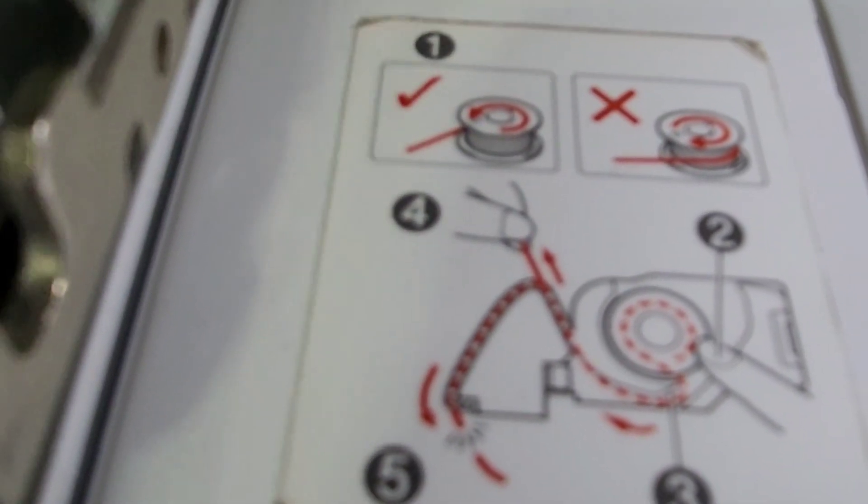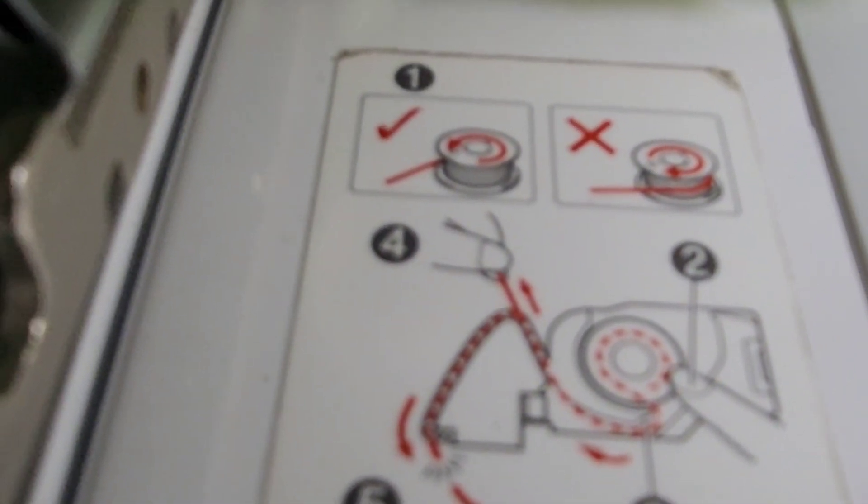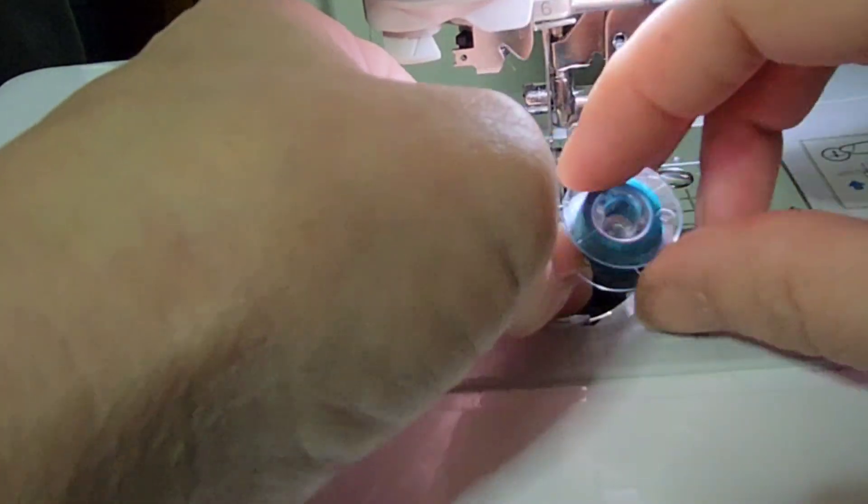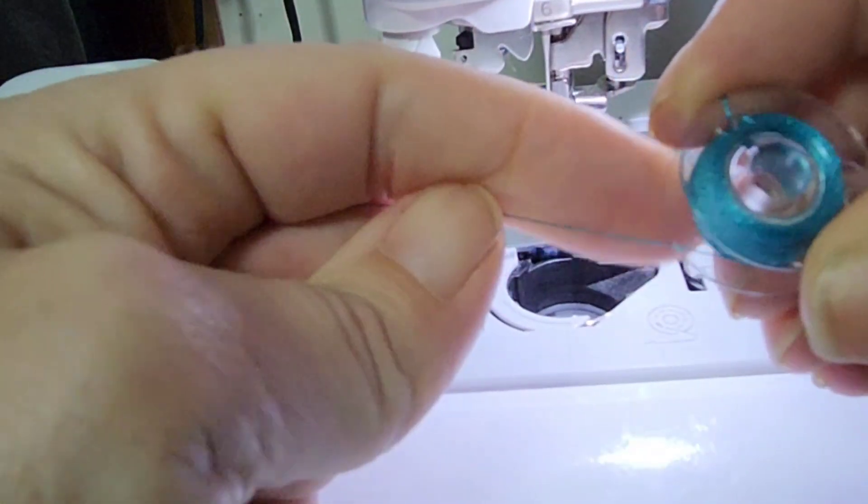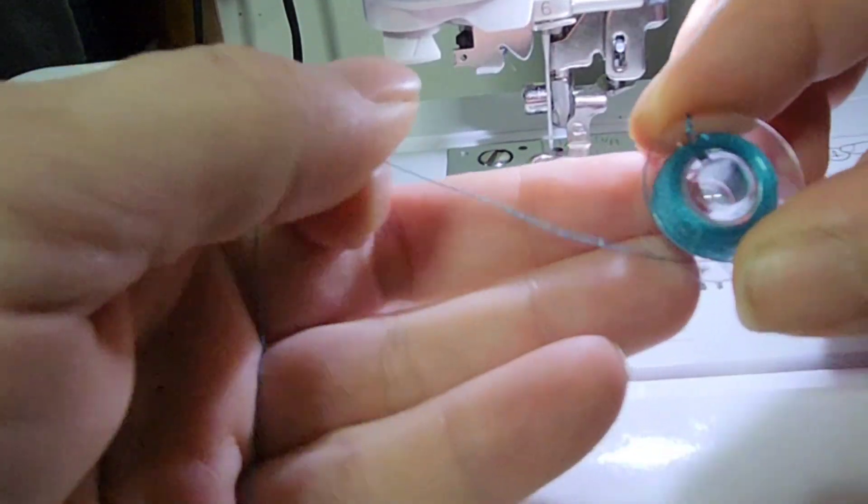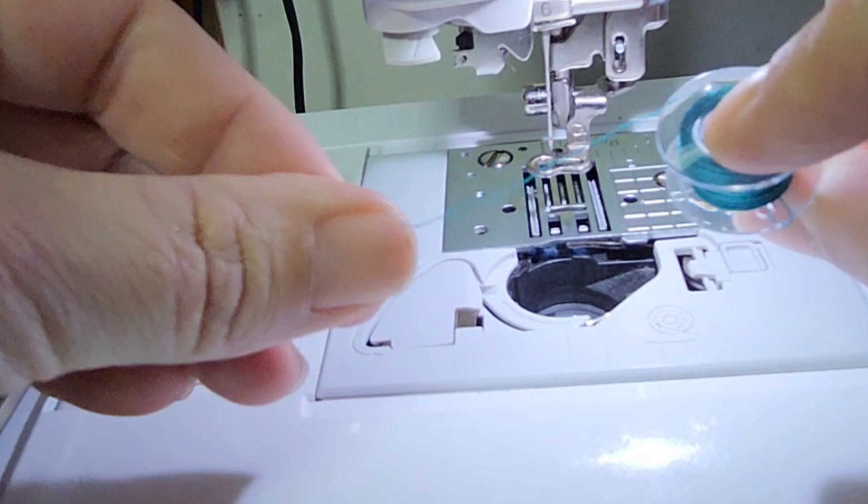This is the way you need to put the bobbin in, and I'll show you real quick. Every time I would put the bobbin in the wrong way, the upper thread would constantly break. Now if you put it in where the thread is coming from this way, no, you need it this way.